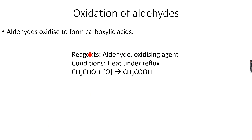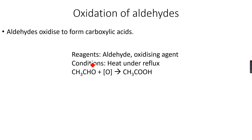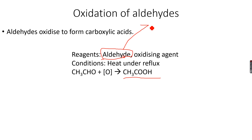Now I'll explain why there is a difference in conditions between oxidizing primary alcohols to form aldehydes versus carboxylic acids — why we distill off for aldehydes and use reflux for carboxylic acids. When you oxidize a primary alcohol under reflux, it first forms the aldehyde, and then the aldehyde oxidizes further to form a carboxylic acid. But when you heat and distill off, the aldehyde has a lower boiling point than the alcohol, so it boils away from the container and cannot further oxidize to form a carboxylic acid.